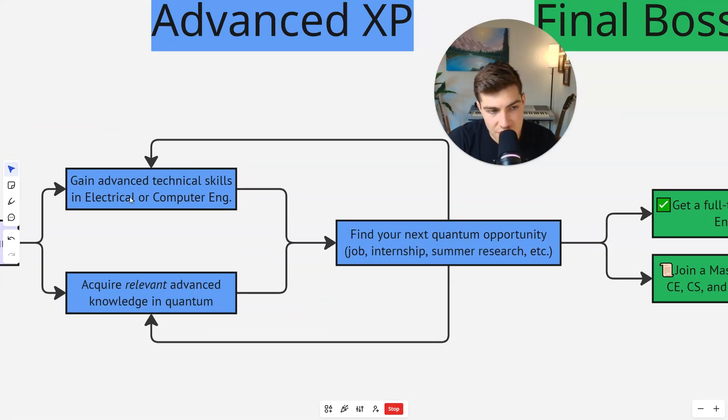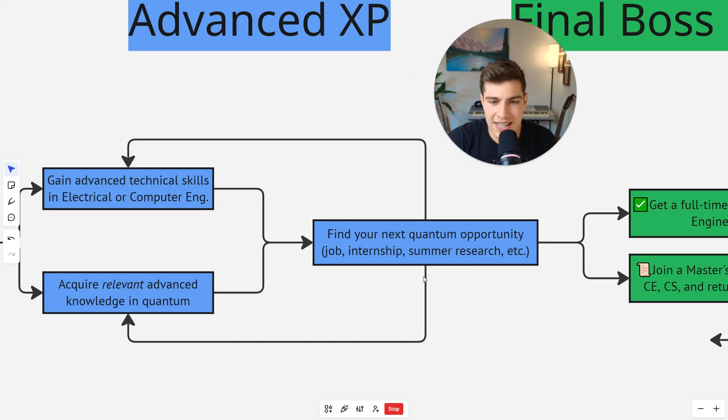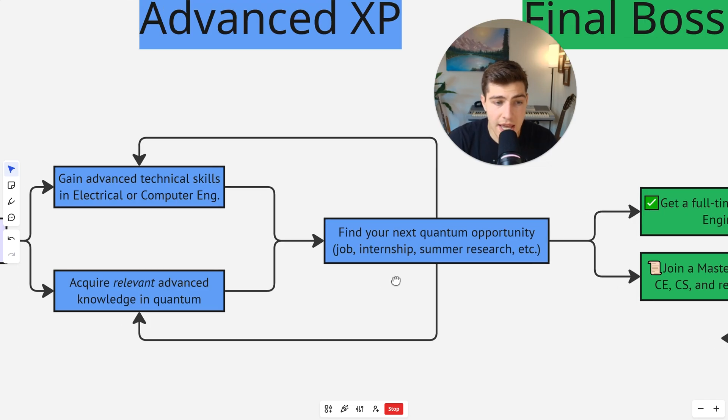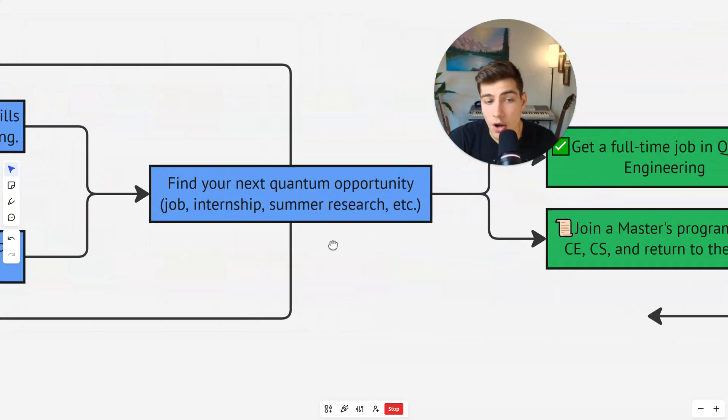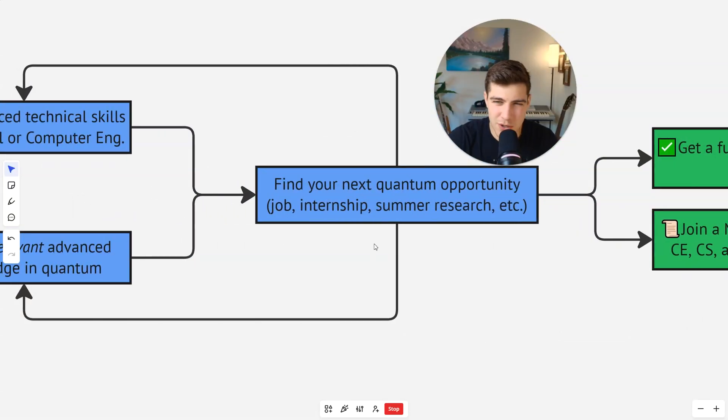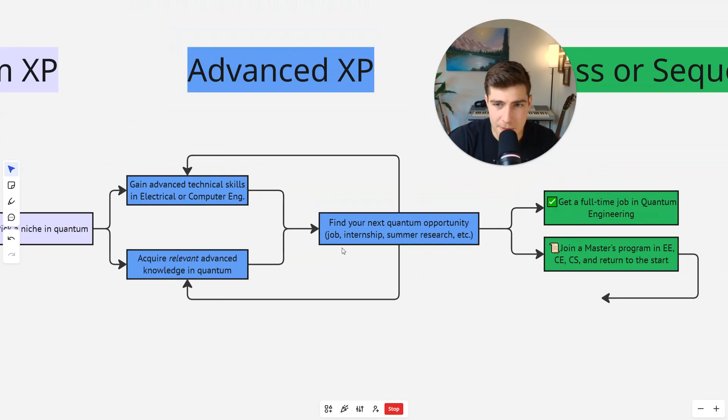So then you're going to leverage your advanced technical skills and advanced quantum skills to get an advanced opportunity, your next opportunity. So your next job, your internship, your summer research, whatever that is. It could be doing more research at your original lab. It could be going and doing another research at another lab. I would recommend doing something different. Don't just stay in the same lab. Get some sort of internship in either electrical engineering or in quantum computing. Do a summer research at a national lab or some other university. And then you just keep iterating. This is an iterative process. You just keep grinding. Keep getting XP.